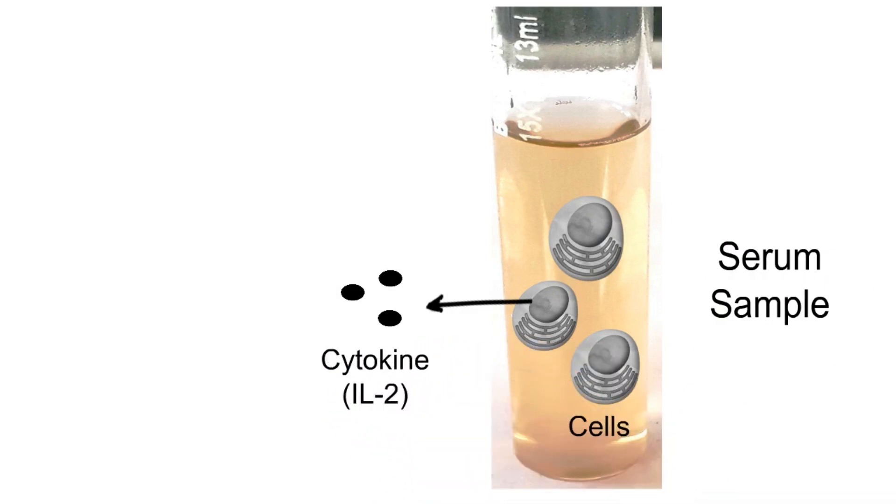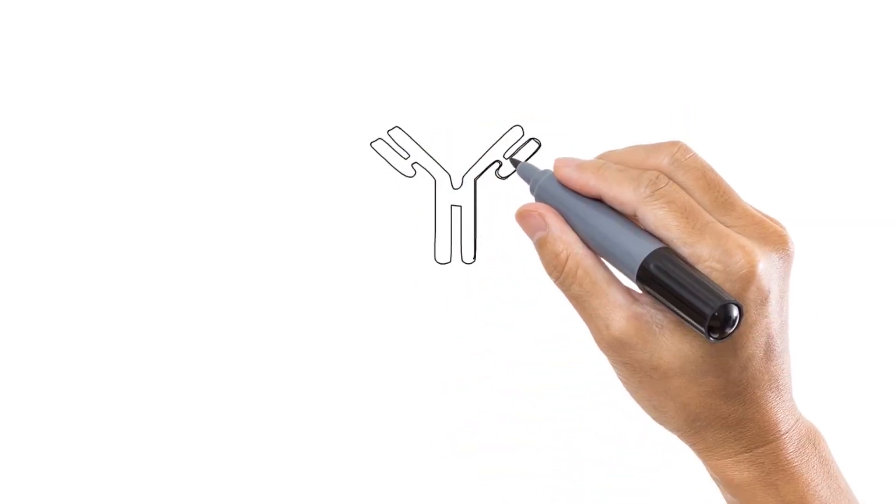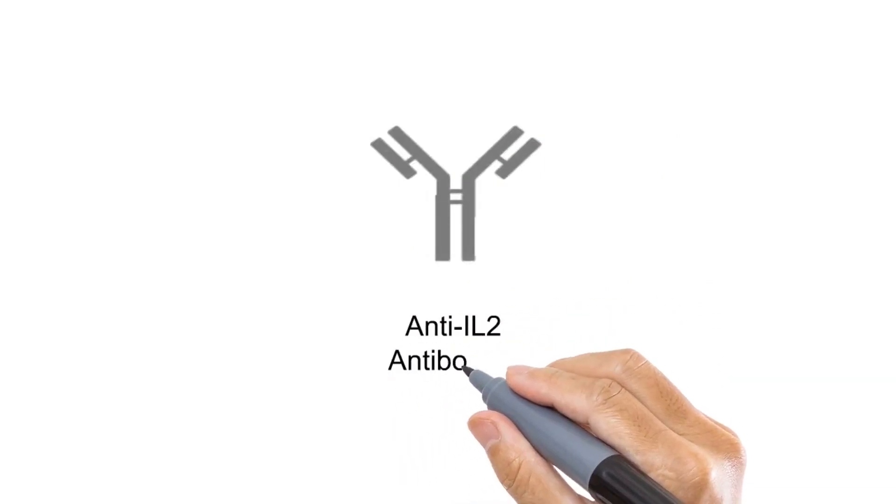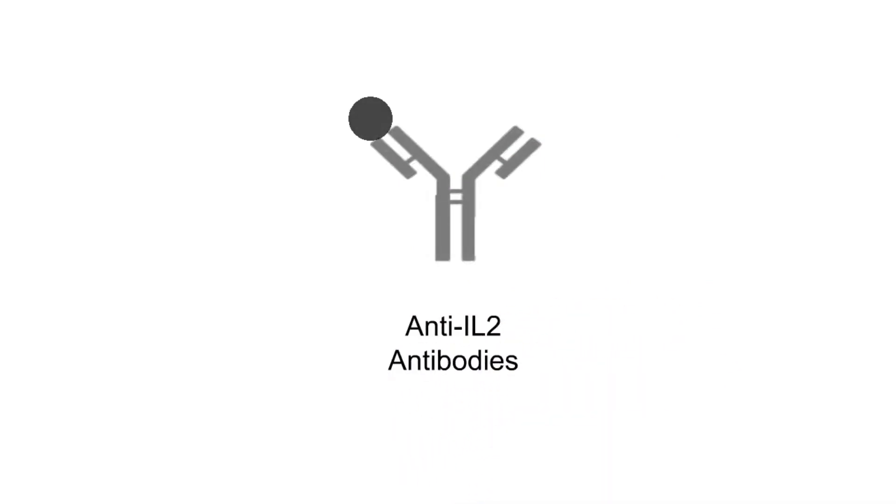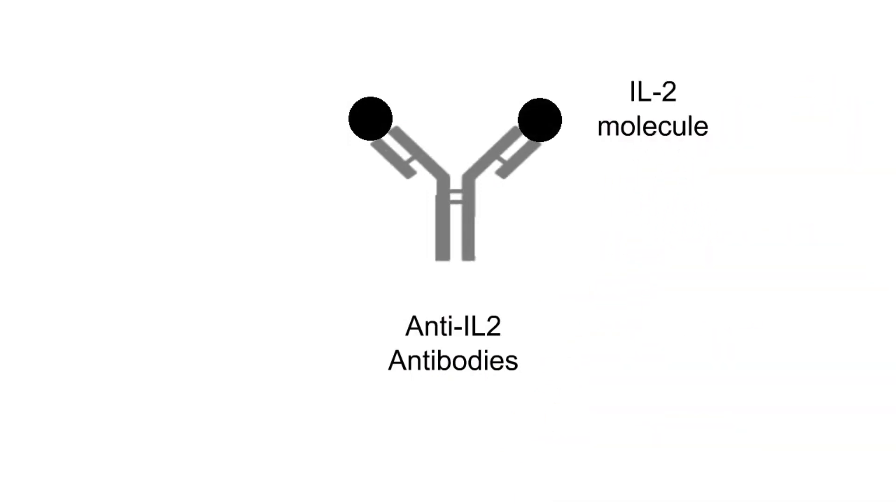For this we will require a few basic things. First is the antibodies against interleukin 2, that is anti-interleukin 2 antibodies. These antibodies specifically bind to interleukin 2 molecule and not any other molecule.